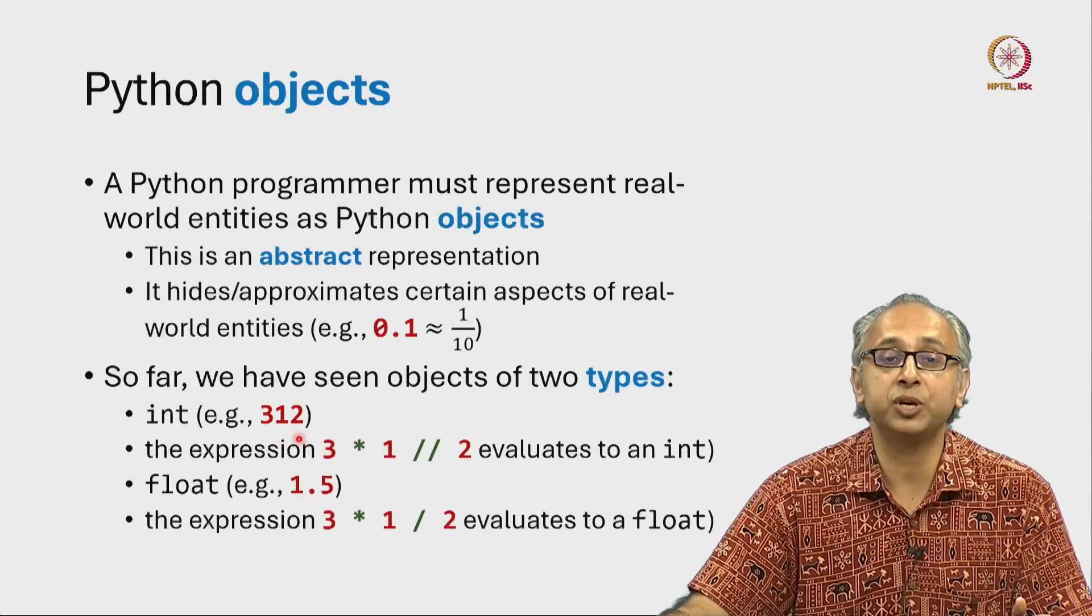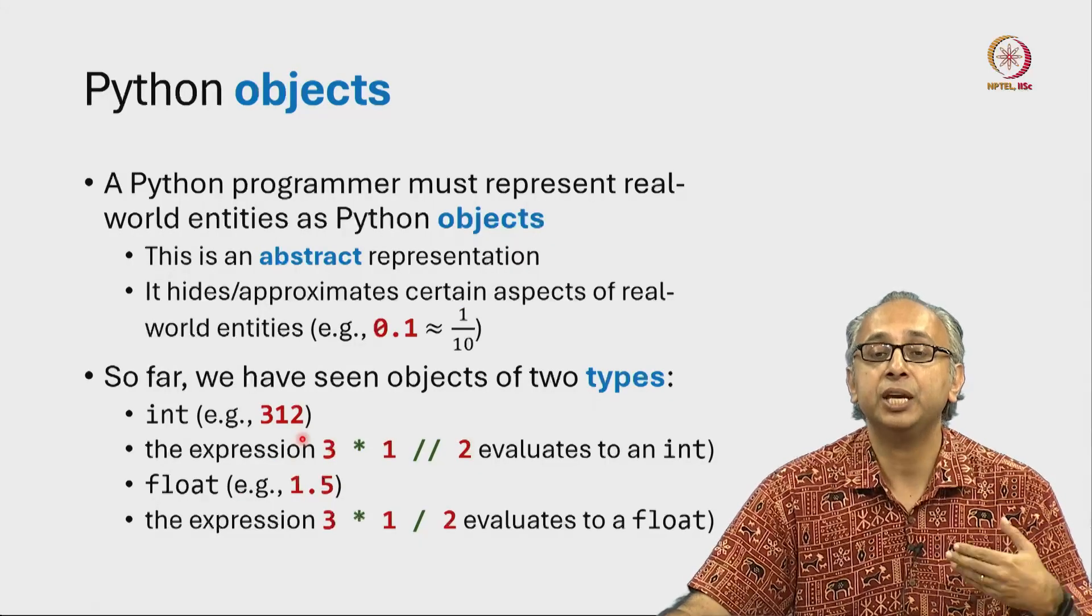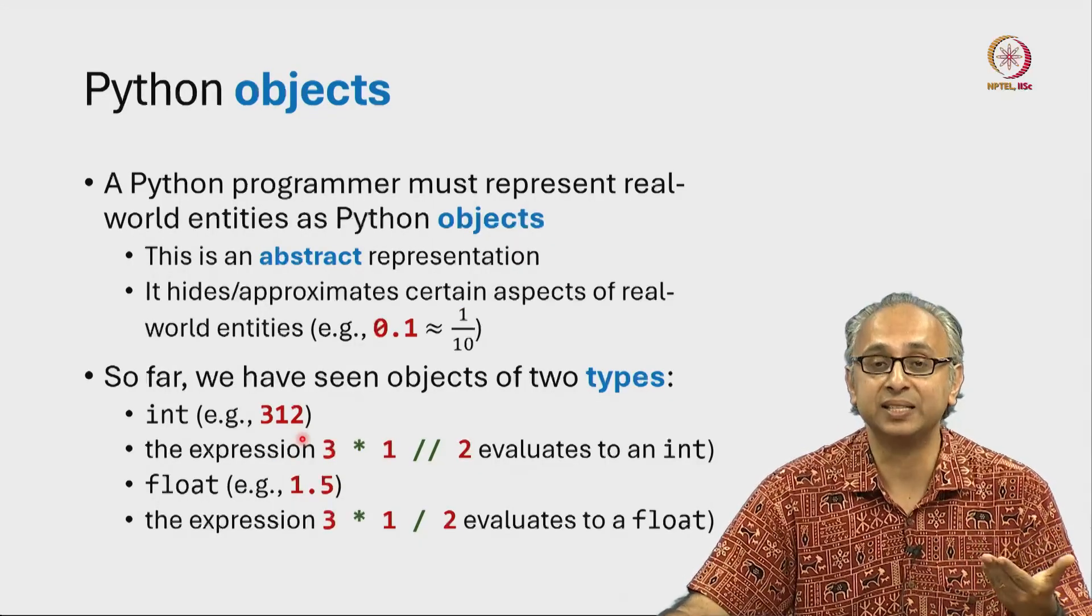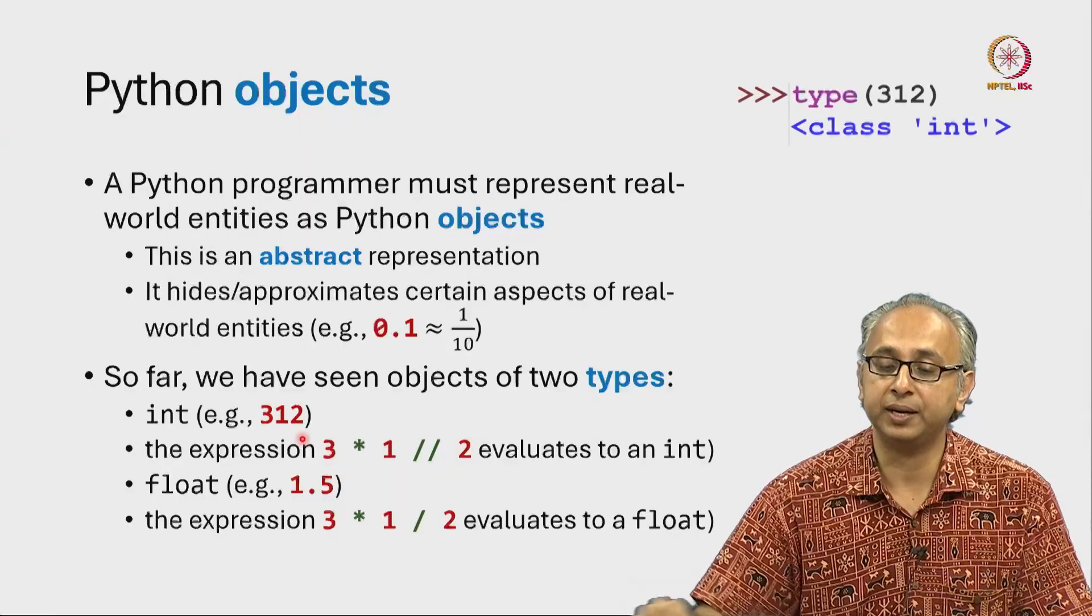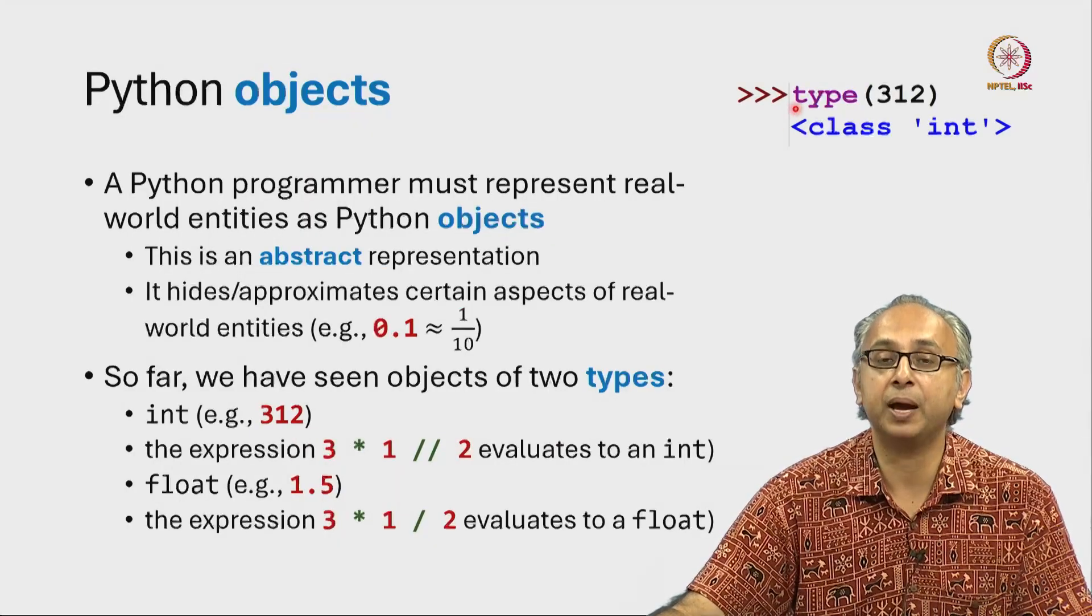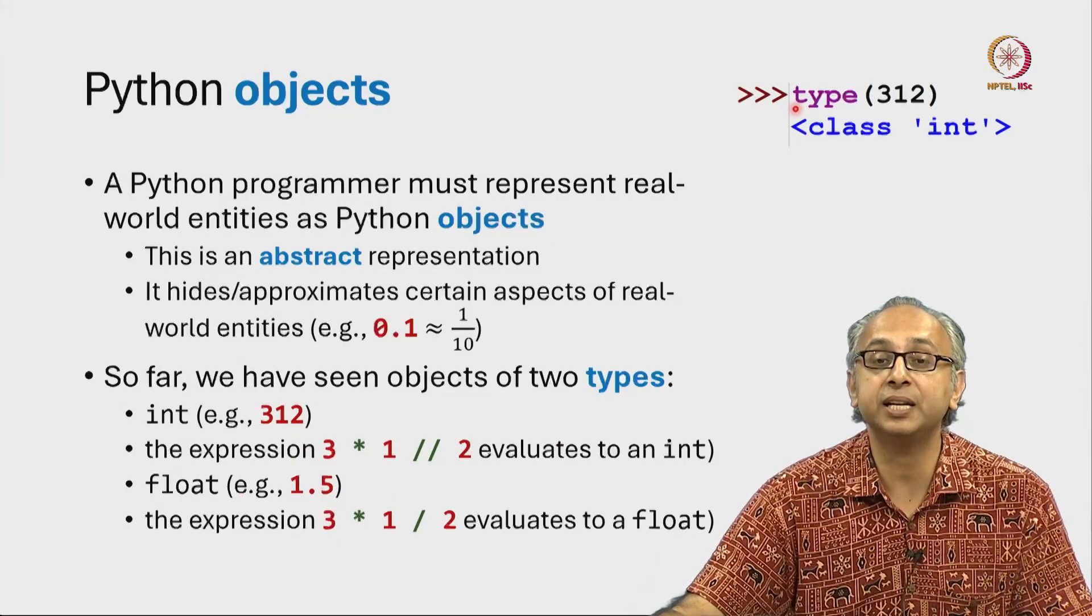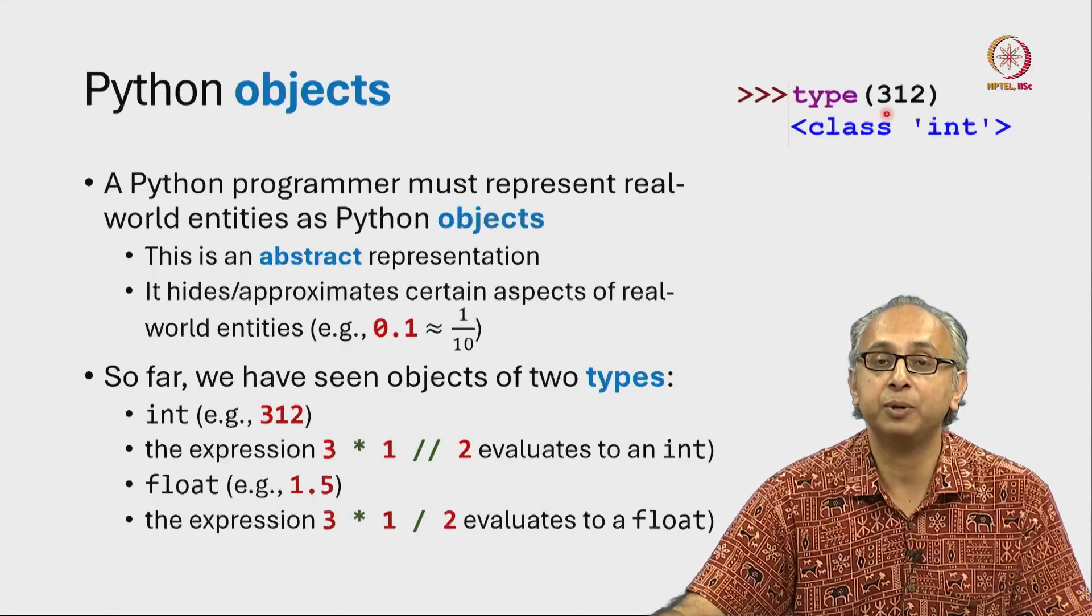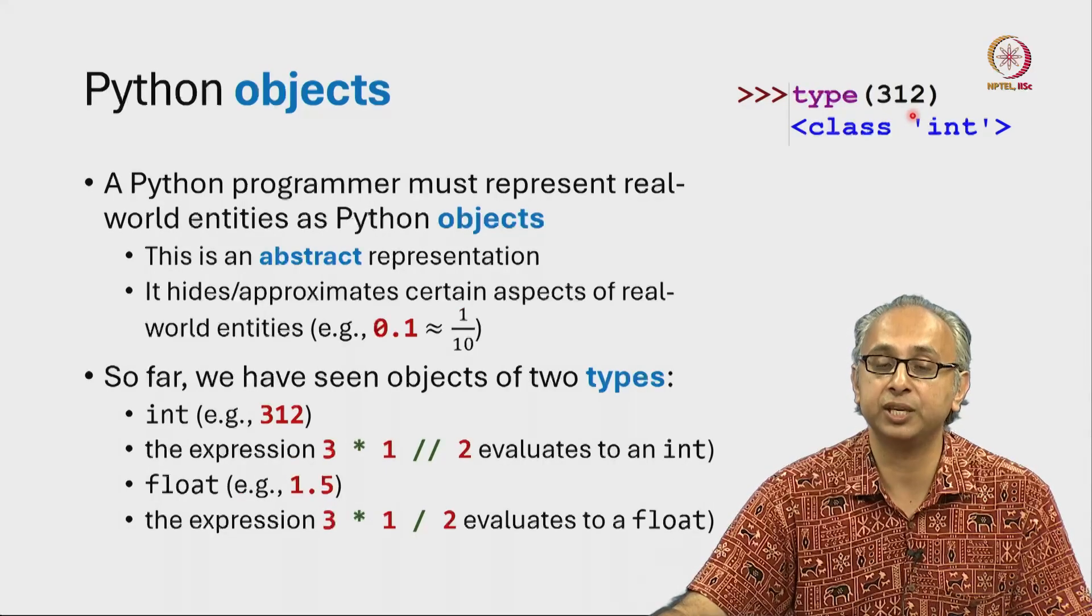So the Python object 312, for example, is of type int. In the Python REPL, we can give this command calling the built-in type function and we can say what is the type of this object.